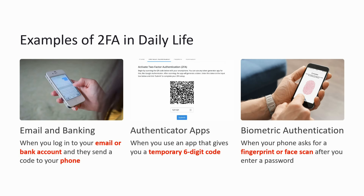What are the examples of two-factor authentication in daily life? First is email and banking: when you log into your email or bank account and they send a code to your phone. Second is authenticator apps: when you use an authenticator app that gives you a temporary six-digit code. Third is biometric authentication: when your phone asks for a fingerprint or face scan after you enter a password.